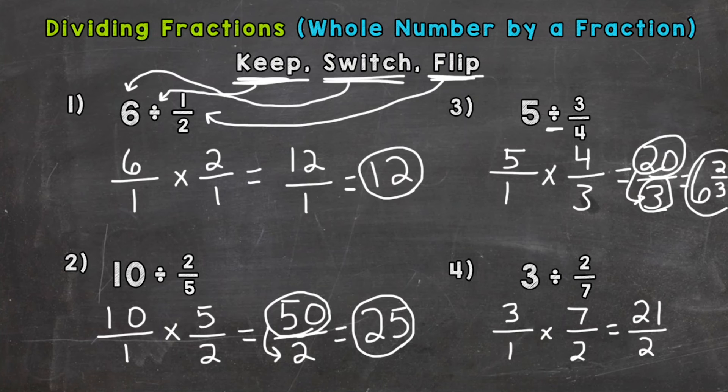So again, we have an improper fraction, so we need to divide the numerator by the denominator. So 21 divided by 2. How many whole groups of 2 can we pull out of 21? Well, 10, and that gets us to 20, so we have a remainder of 1, and we keep our denominator the same. So 10 and 1/2.